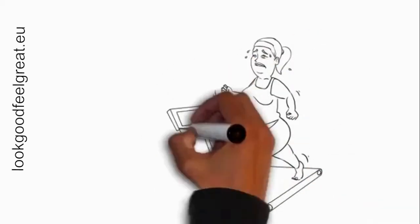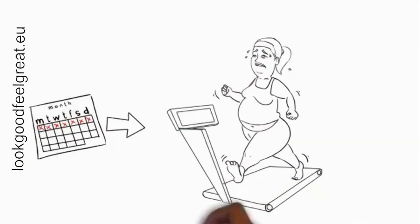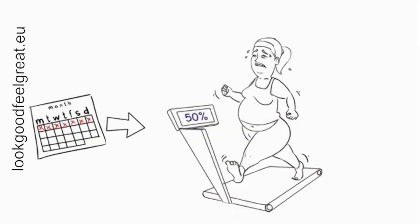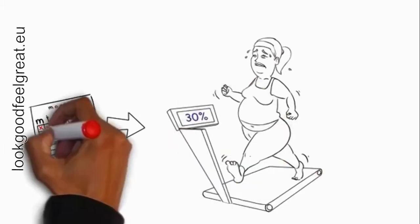In fact, research has shown that leptin levels drop by as much as 50% after just seven days of dieting. That puts you at only 50% of your fat-burning potential just one week into your fat loss plan, and it only gets worse with each passing day.